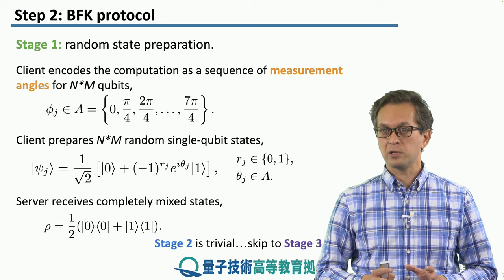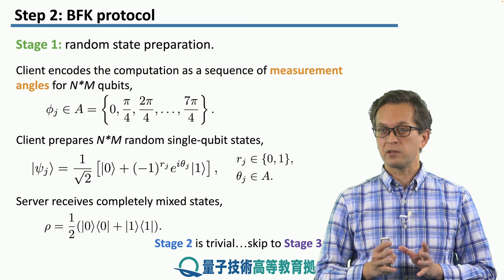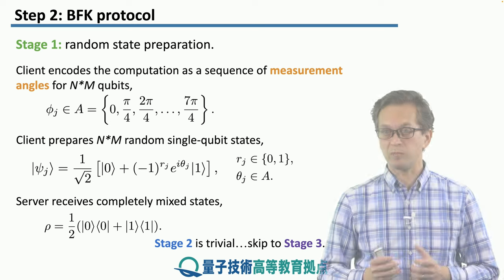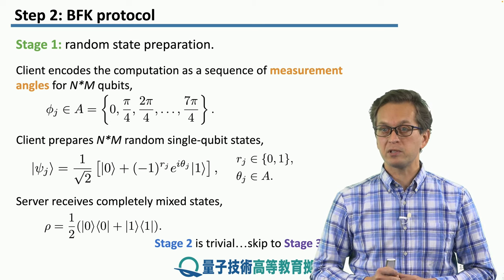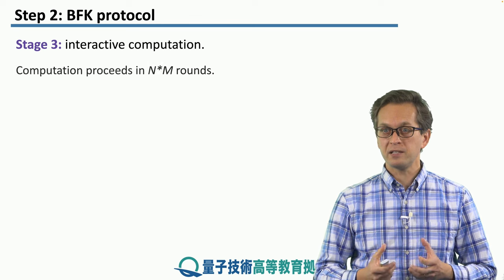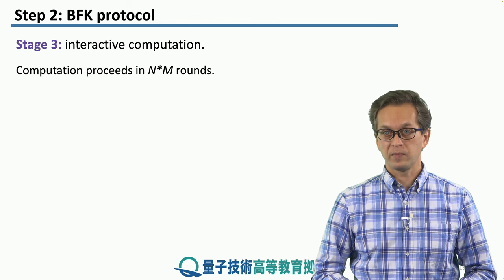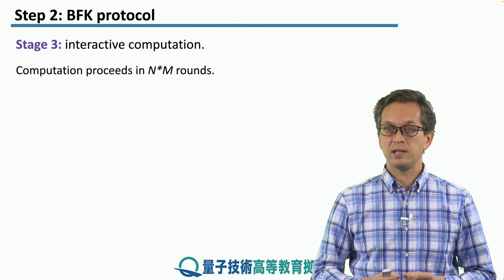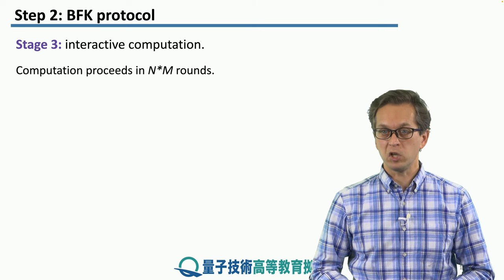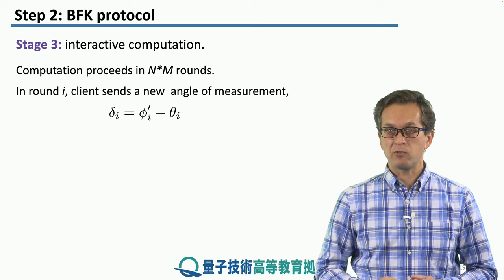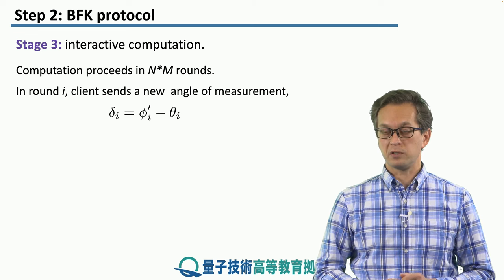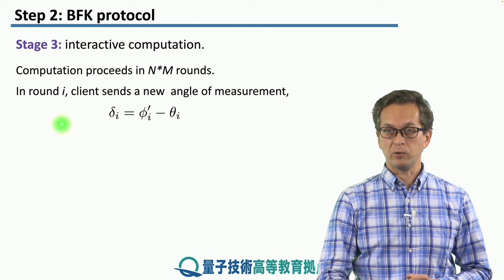Stage 2 is trivial: the server simply applies C-phase gates between the necessary qubits and creates the brickwork state. In stage 3, the computation happens — this is the interactive part of the protocol. The computation proceeds in n times m rounds, because we have n times m physical qubits. In round i, the client sends a new angle of measurement to the server.